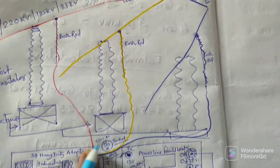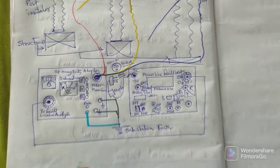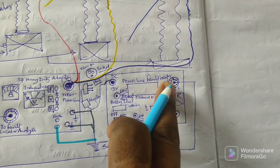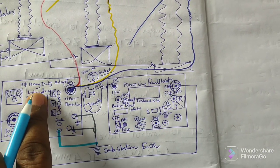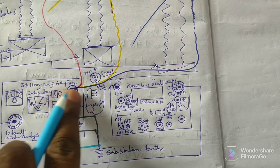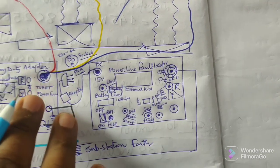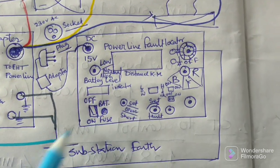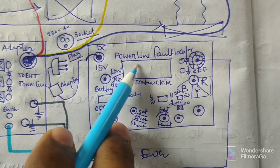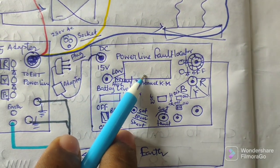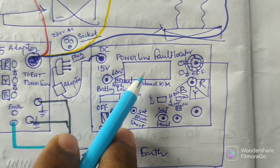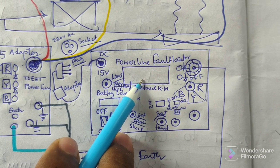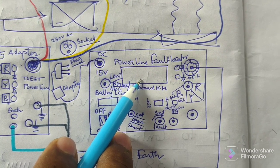Now let's discuss about the machine. The machine has two parts: one is the power line fault locator and the other is the heavy three-phase heavy-duty adapter. This is the display where you will get the information about where the exact short circuit fault or open circuit fault has occurred.